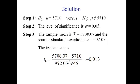And in step 3, we calculate the value of our test statistic. So remember, we had a sample mean of x̄ = 5708.07 and a sample standard deviation of s = 992.05. So we plug these values into our test statistic and we get t₀ = -0.013.